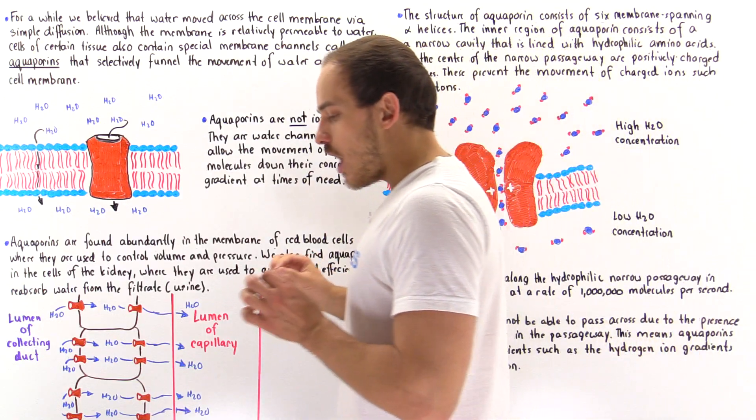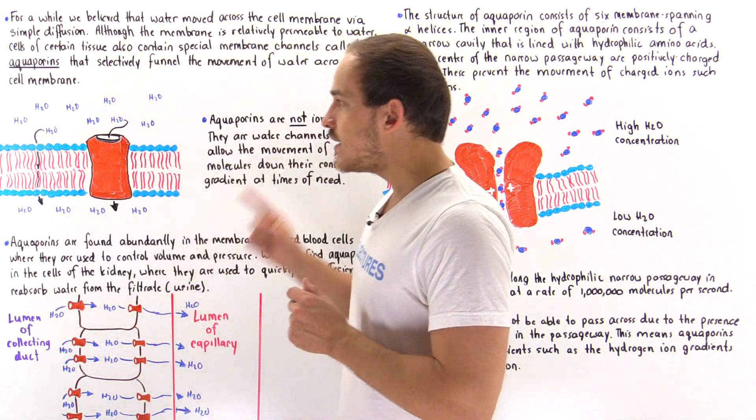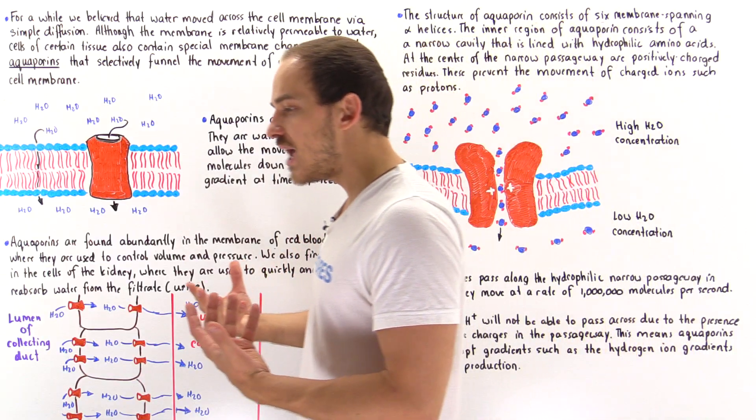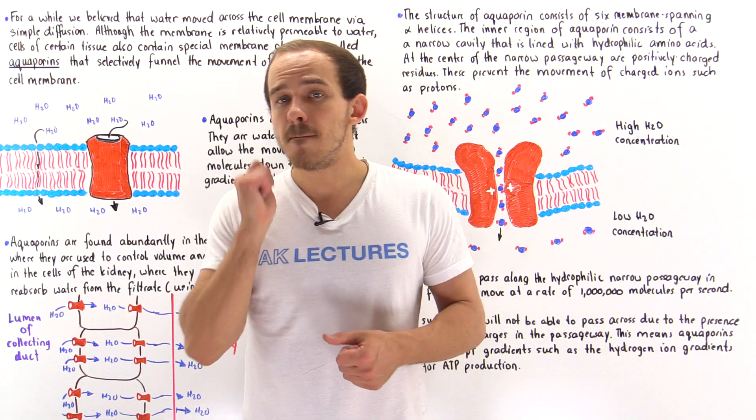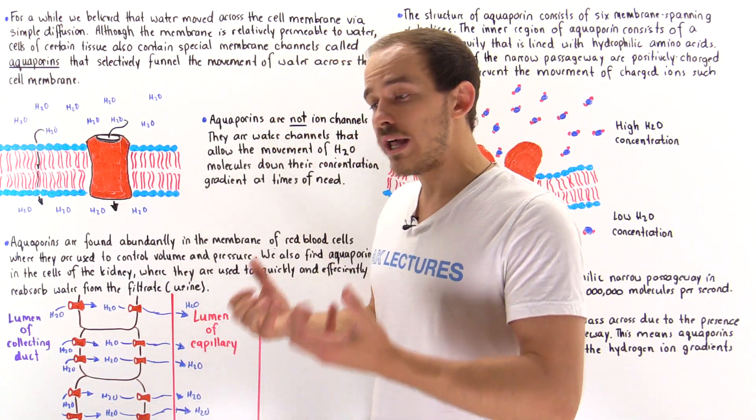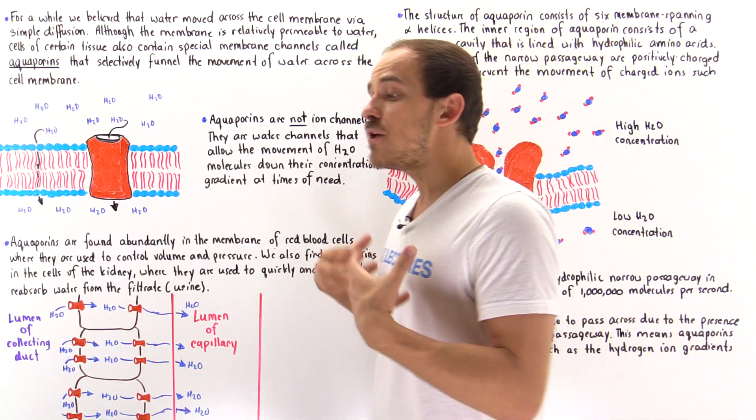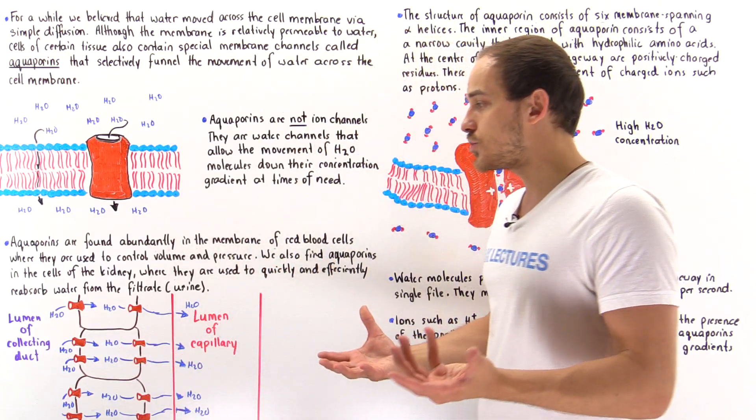Another example are red blood cells. Red blood cells actually contain a high concentration of aquaporins in their membrane because as they travel through the capillaries, they must be able to actually control and regulate the volume inside the red blood cell and the pressure inside that red blood cell, the hydrostatic and the osmotic pressure.